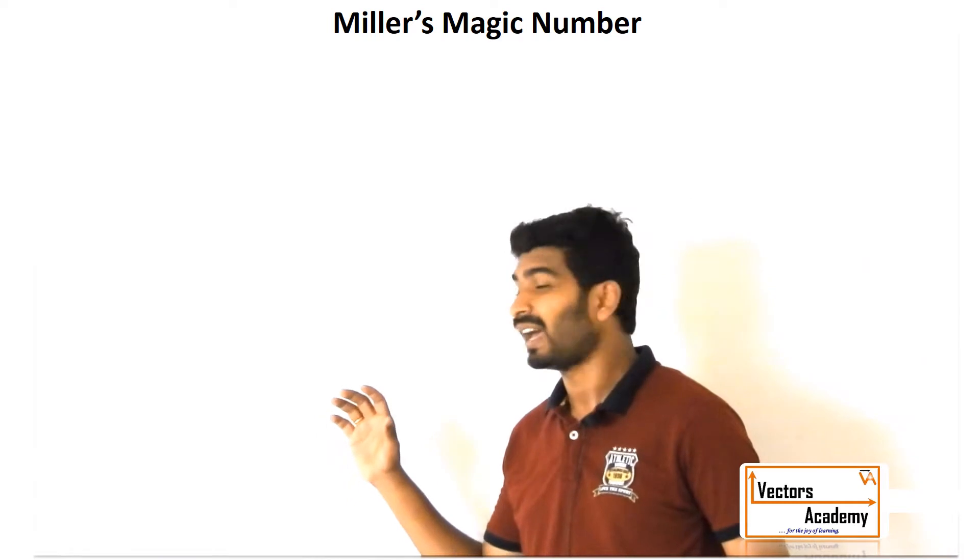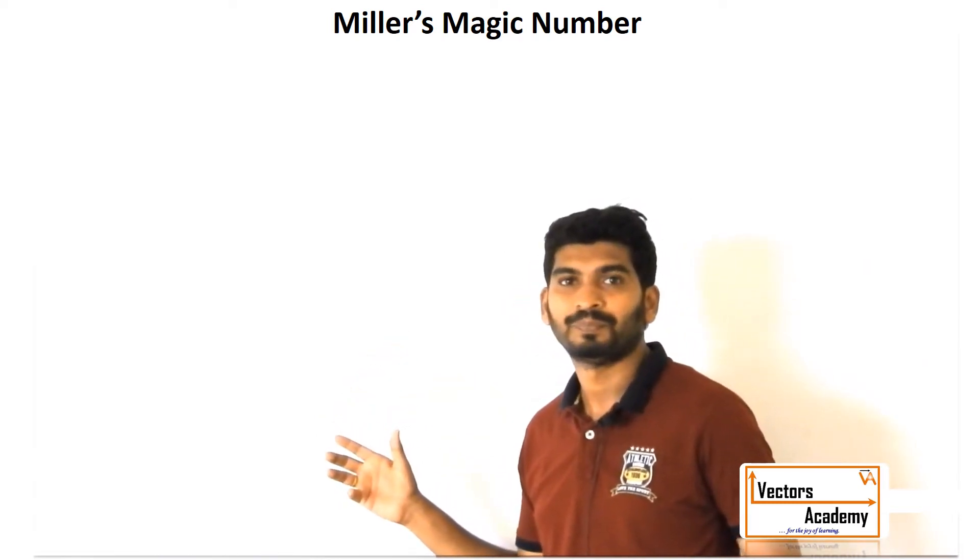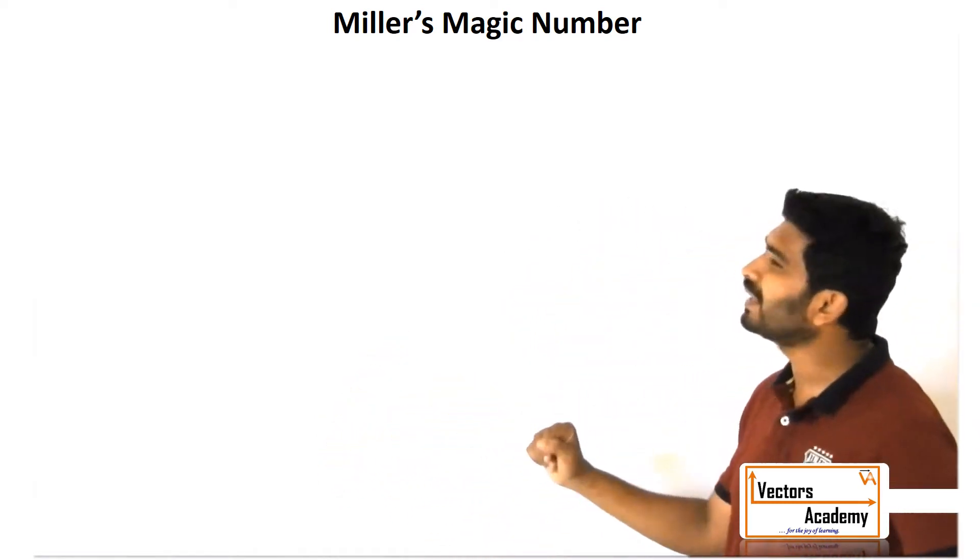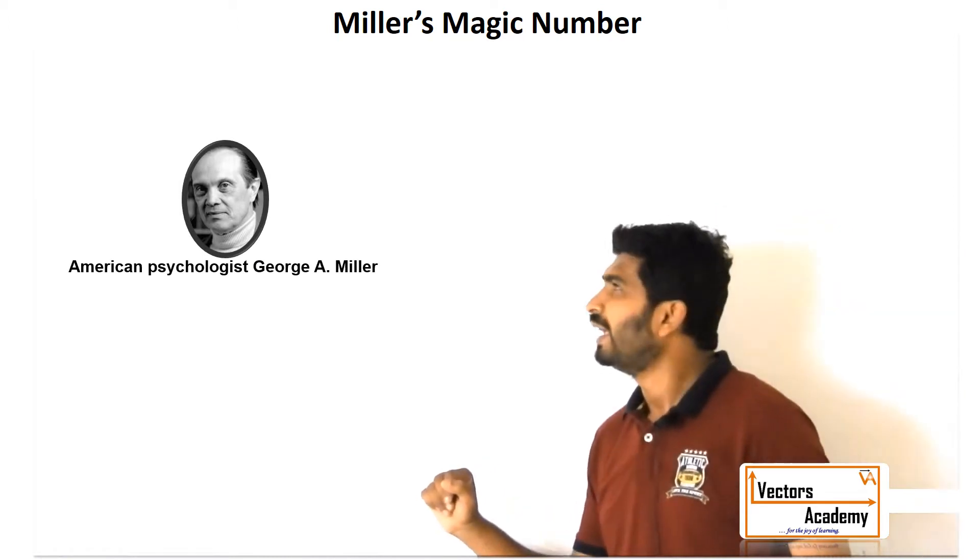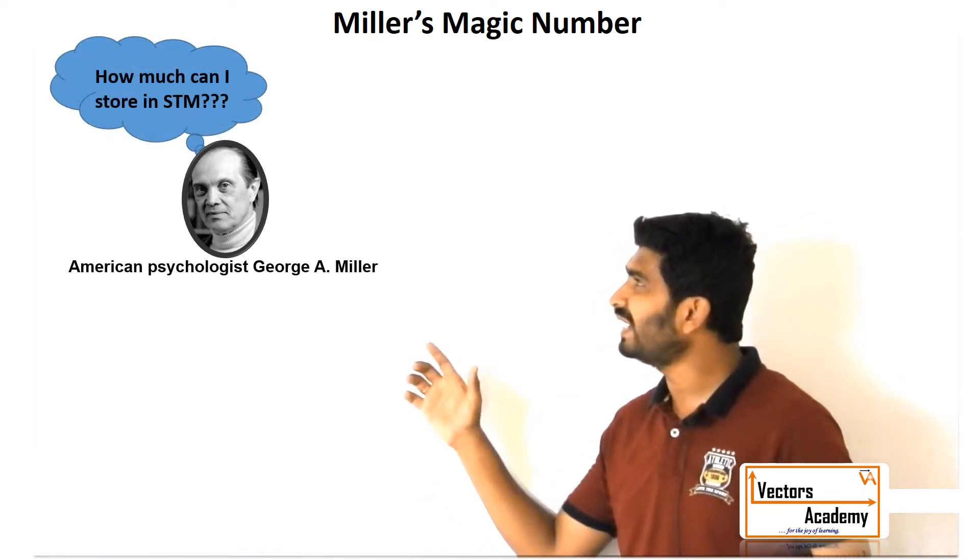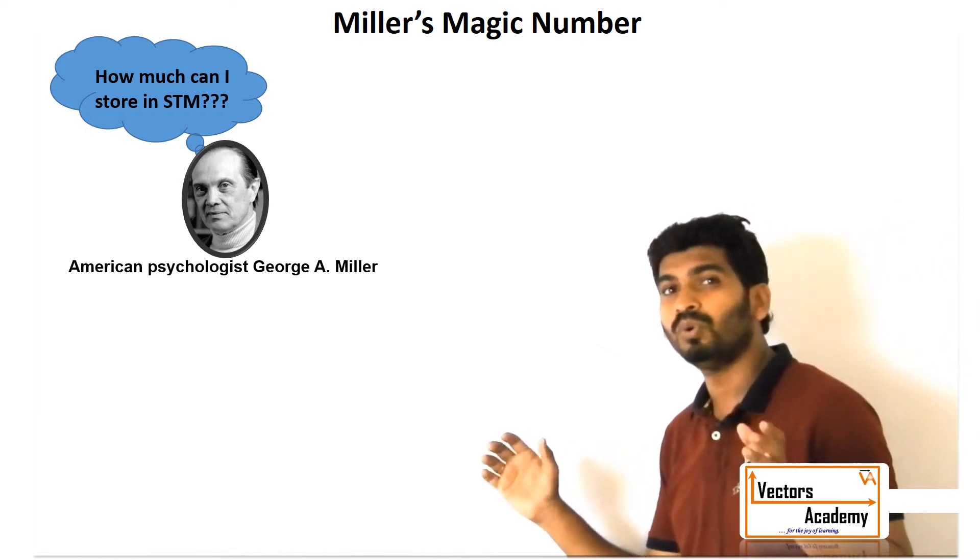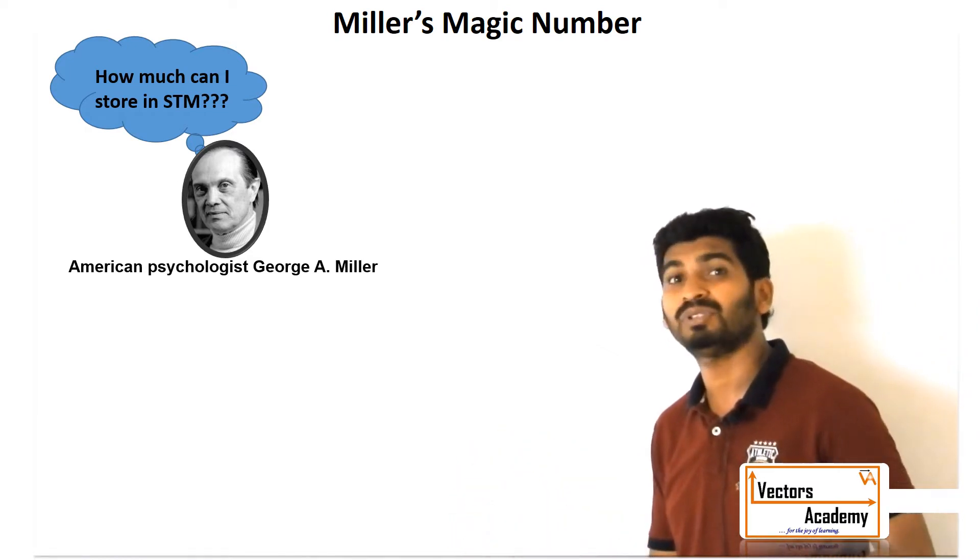Now let's take a look at Miller's Magic Number. Miller was an American psychologist. In 1956, he decided to conduct an experiment to know what amount of data can be stored in short-term memory.